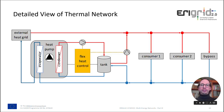A detailed view of the thermal network: you can again see the consumers. They are fed with hot water from the supply line, and the cold water returns to the external grid via the return line. The return line is also the cold water source for the tank and for the evaporator of the heat pump. The flex-heat controller controls two pumps — one moves hot water from the heat pump condenser to the storage tank, and the second moves hot water from the storage tank to the supply line of the thermal network.